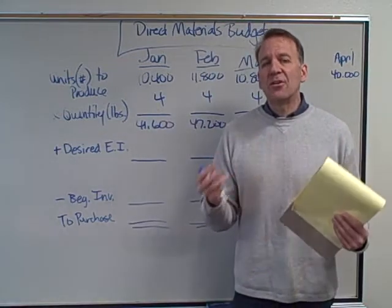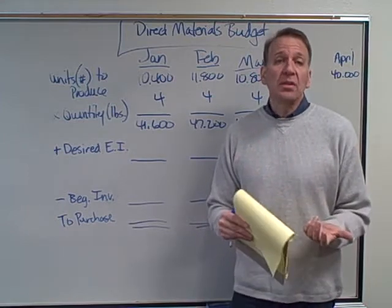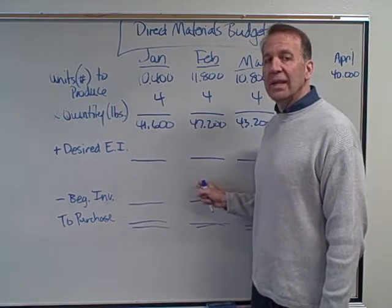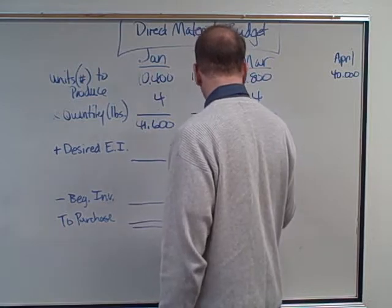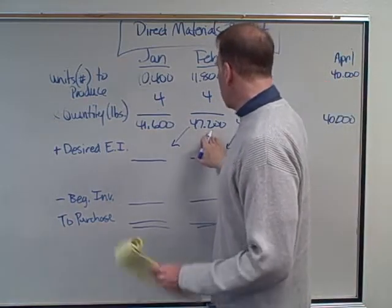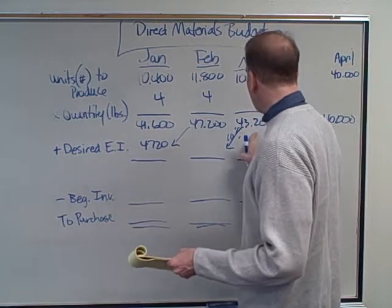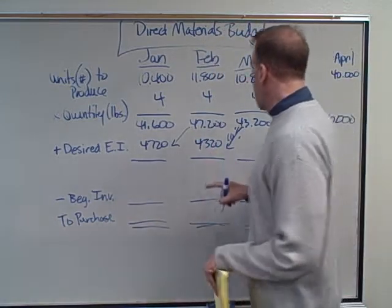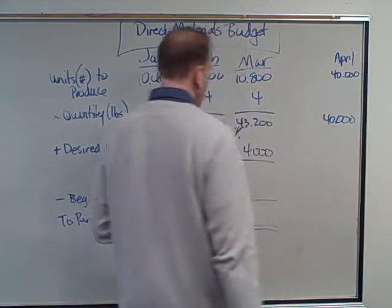Just like the production budget, we need a desired ending inventory — we want to start the next month with some tomatoes already on hand. The problem will give you a percentage, usually a percentage of the next month's needs. In this example it's 10%. April's production needs are 40,000 pounds, so 10% of 47,200 is 4,720 for January's ending inventory; 10% of 43,200 is 4,320 for February's; and 10% of 40,000 is 4,000 for March's.